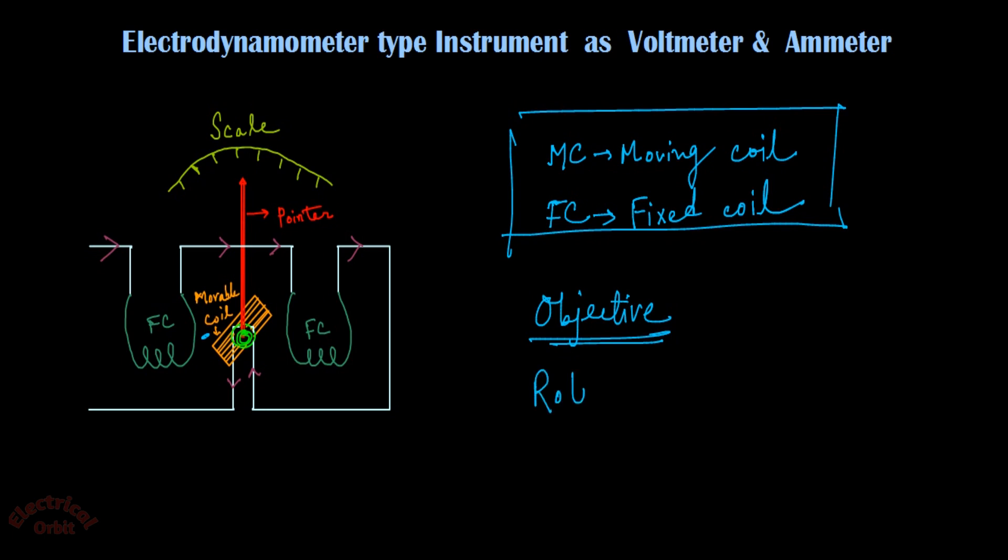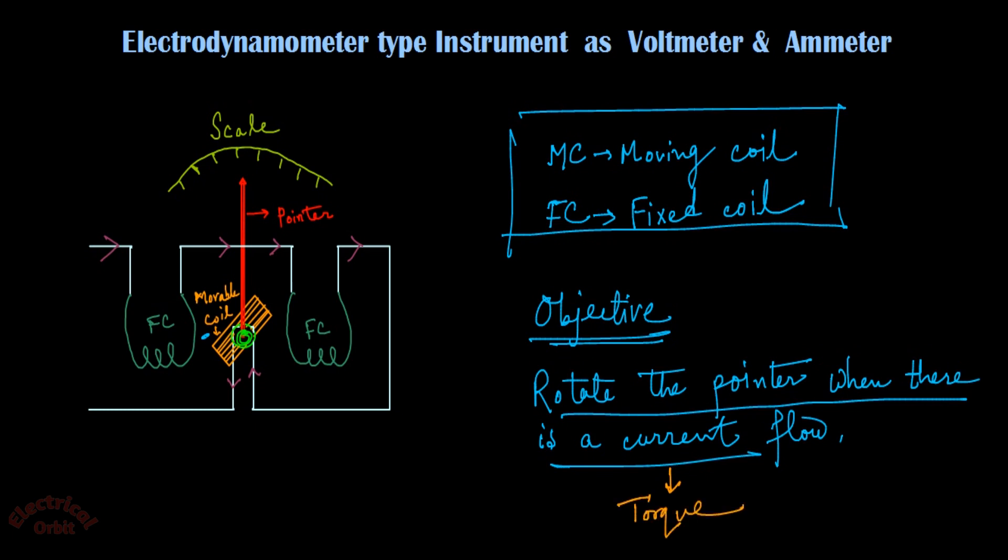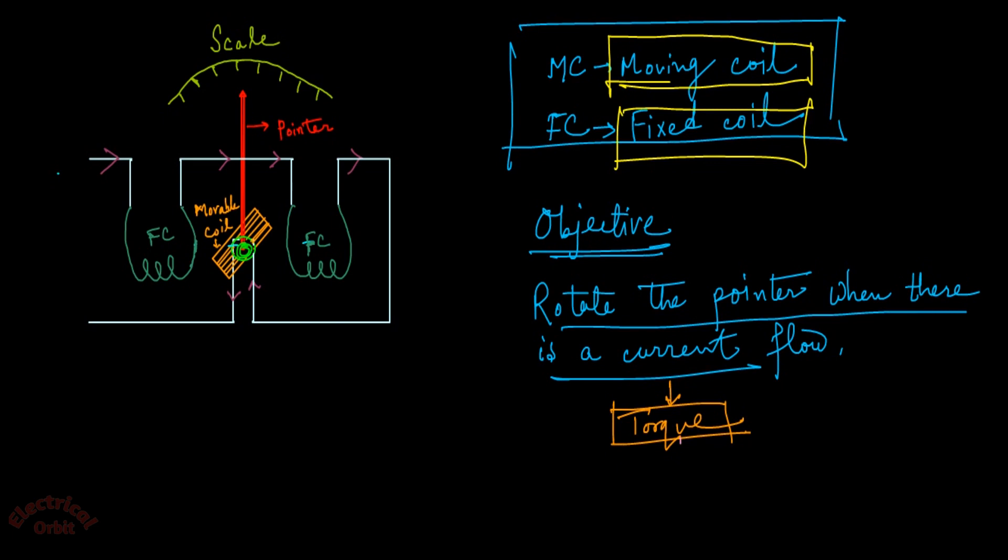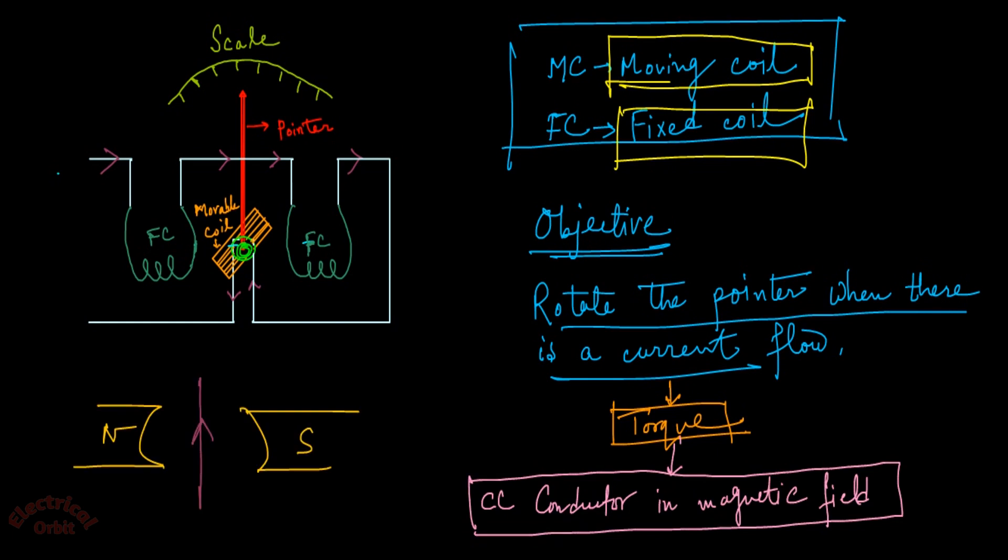rotate the pointer when there is a current flow. For that, we need to apply or generate a torque. How could we generate the torque? If a current carrying conductor is placed in a magnetic field, it automatically experiences a force. Whenever it experiences a force, it tries to deflect.